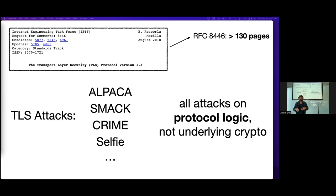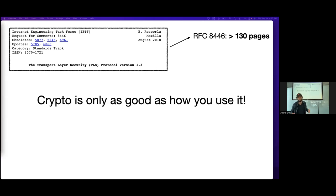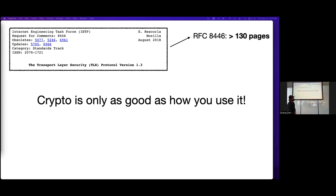Nobody's breaking the security of AES here. Instead, they're tricking the protocol into doing something insecure, which means that even if all the underlying crypto is perfect, the crypto is only as good as how you use it. Some attacks are due to bad implementation of the protocol, and some instances involve the protocol logic itself being faulty. There are also cases where the logic implemented is not what's specified by the RFC. This is all about how to use crypto well.